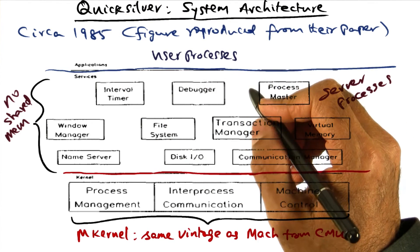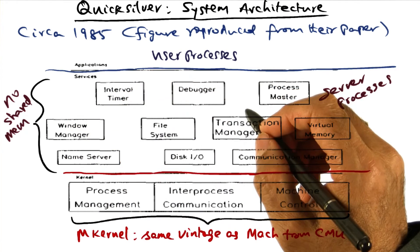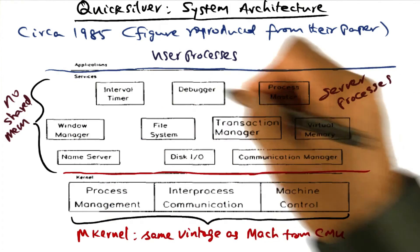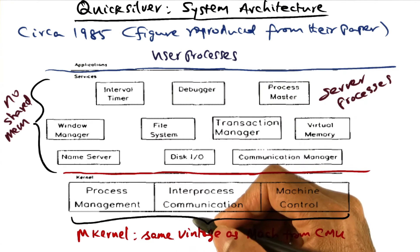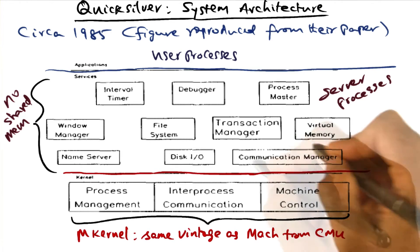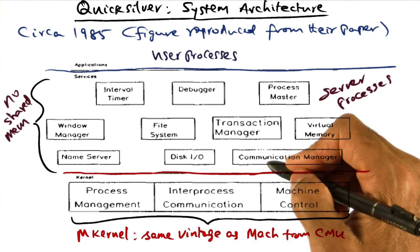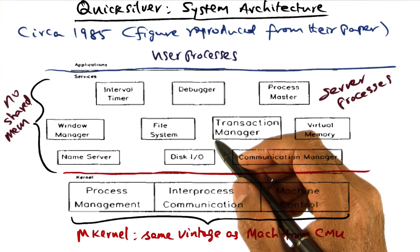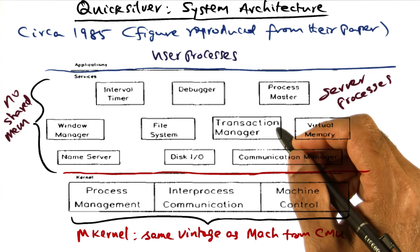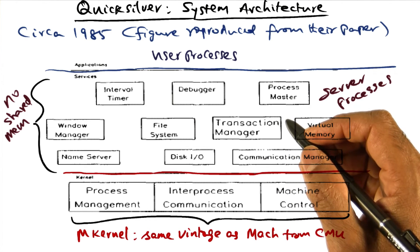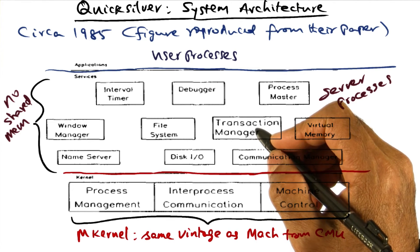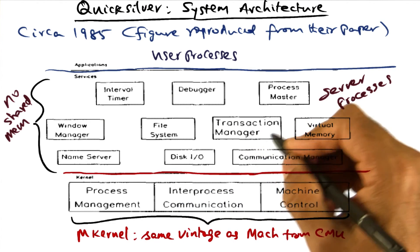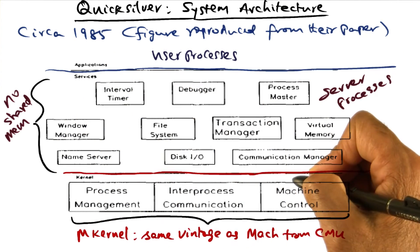What set Quicksilver apart from the competition at that time were new services such as a window manager for managing the real estate on the workstation screen, and how it should be integrated into the operating system as a whole. Services that may not be available on the workstation itself — for example, a file server may be remote — so integrating communication into the design of the operating system was key. Services within a workstation and across workstations on the network need to recover from failures. Rather than ad hoc mechanisms for each server, Quicksilver was the first to propose transactions as a unifying concept for recovery management, making it the first operating system to propose transactions. That's why you see a transaction manager as part of the services provided by the operating system.